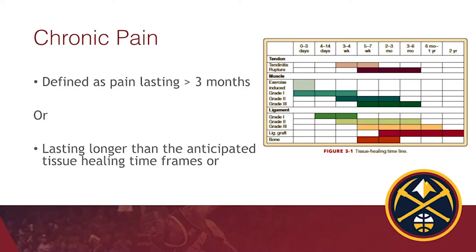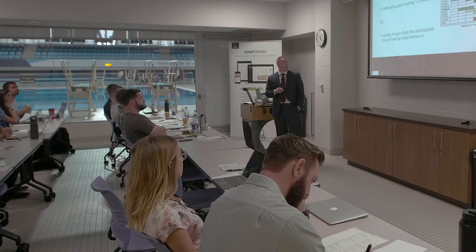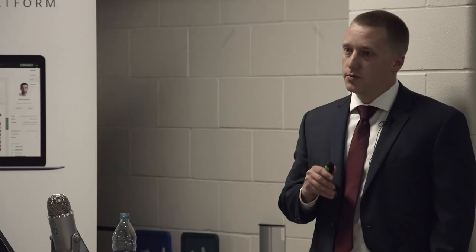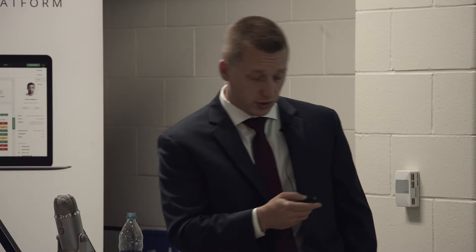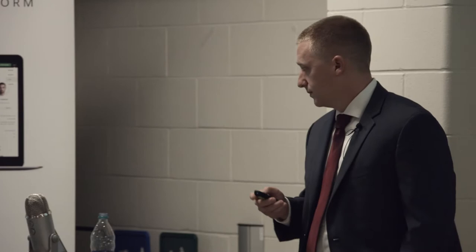Chronic pain works very differently. Australians have pioneered a lot of this research because of how expensive chronic pain is on the general medical system, not just for athletes. Chronic pain is defined as pain lasting greater than three months, though a better definition is pain lasting exceptionally longer than the anticipated tissue healing timeframe. So if you have a minor muscle sprain, pain lasting two months much more qualifies as chronic than waiting for that arbitrary three-month mark.